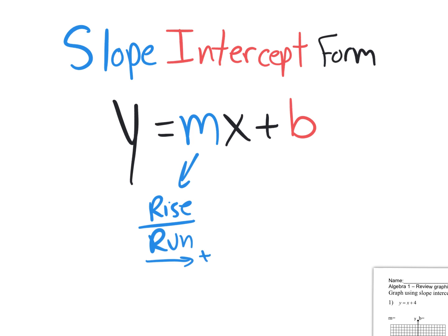The rise could be positive if it's going up, but it could also be negative if it's going down. So the fraction might be a positive fraction or it might be a negative fraction. If it's a positive fraction, that means you're actually rising up. If it's a negative fraction, that means you're actually rising down. But the run is always from left to right — it's always positive.